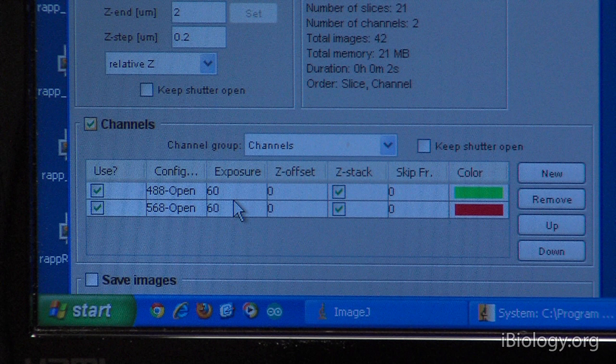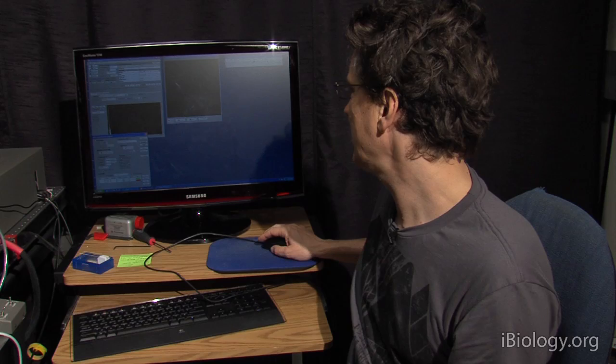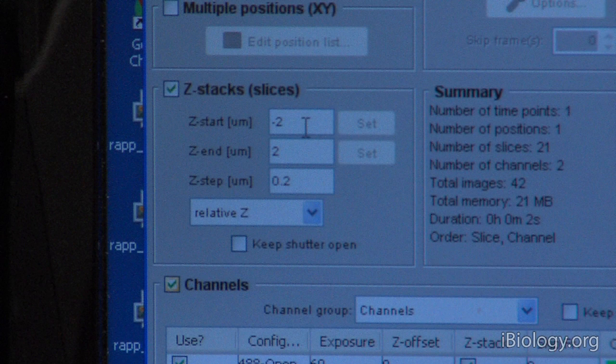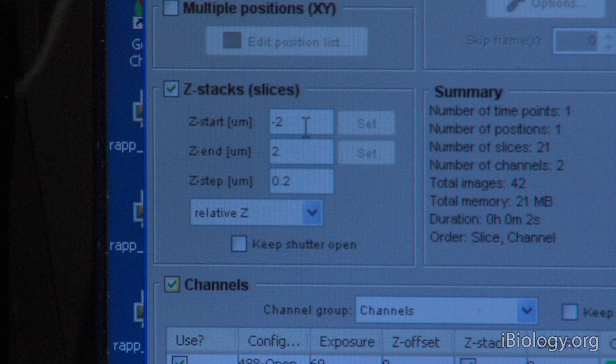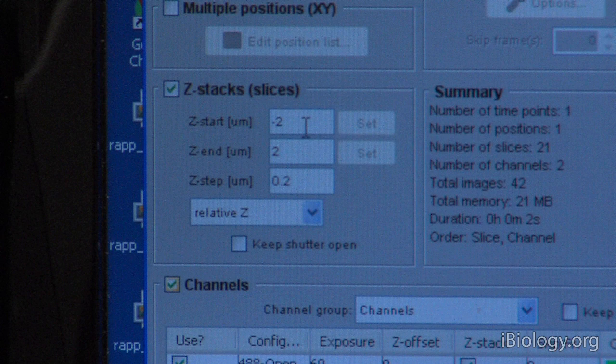So I use here configurations that don't do any of that. And then when I now press acquire and I'm asking here for steps of 0.2 microns from minus 2 to plus 2, so this is a total of 21 slices in two channels.